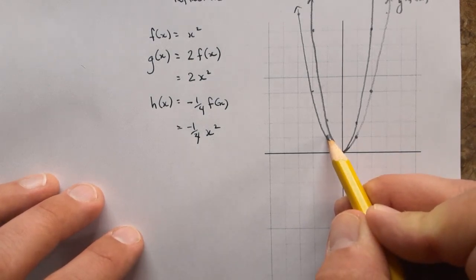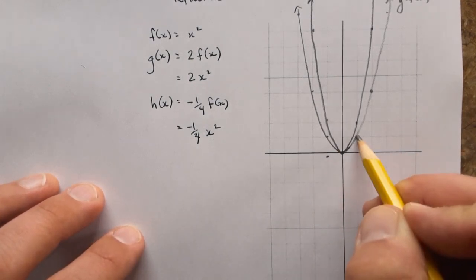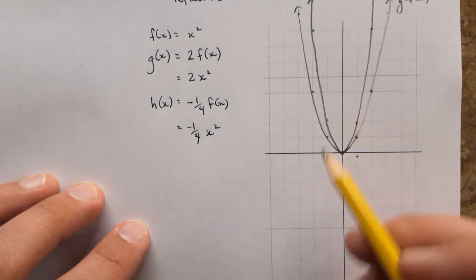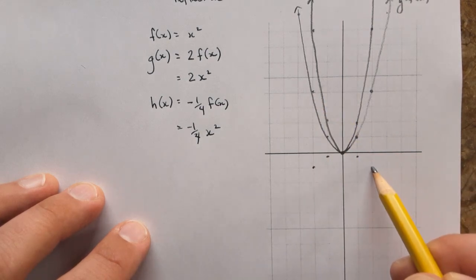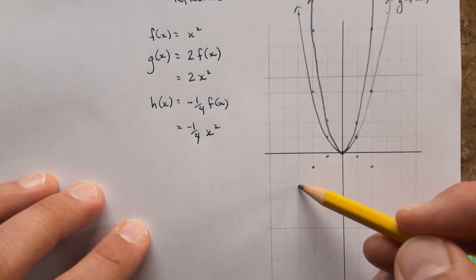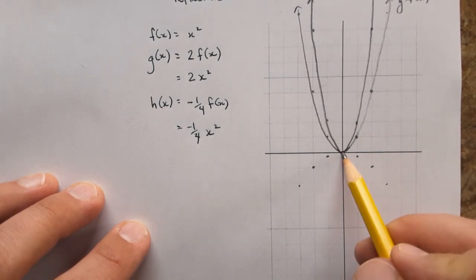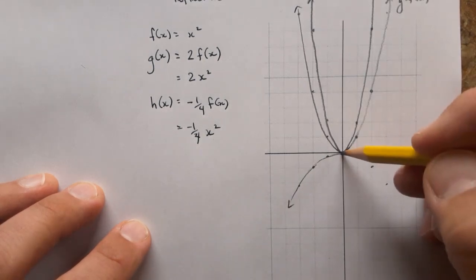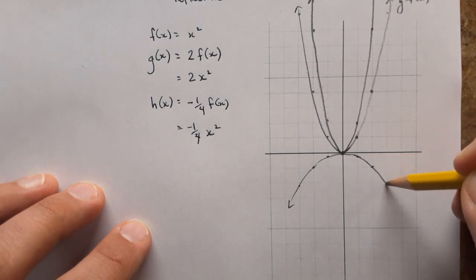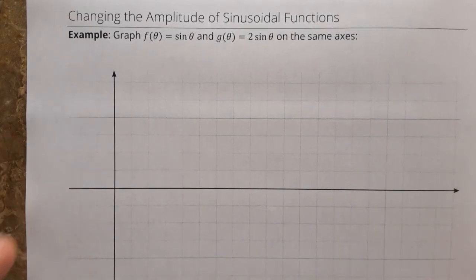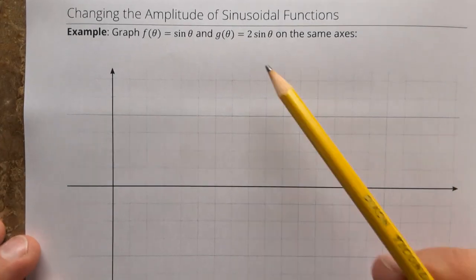So instead of one, it's going to be flipped over and it'll be one quarter. Those are the y values. Instead of a y value of four, it's going to be one quarter of that and negative. So negative one. This value here would have been nine. So one quarter of nine or nine quarters is right there. And it's negative. And we see this effect where it looks wider, but it would be better to think of it as being compressed vertically, smooshed down toward the x-axis and also reflected in this case.